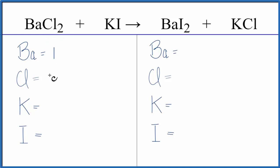We have one barium, two chlorines, one potassium, and then one iodide.